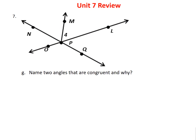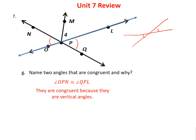Problem 7G asks us to name two congruent angles and why. The easiest way is to look for vertical angles — angles formed when two lines cross, where opposite angles are equal. For example, angle OPN and angle QPL are vertical angles. They are congruent because they are vertical angles.